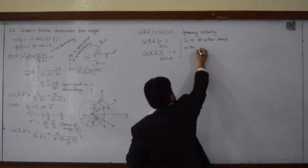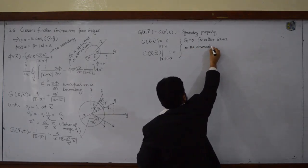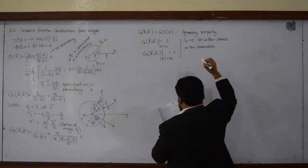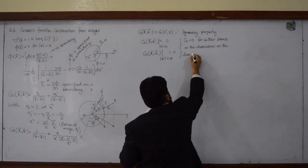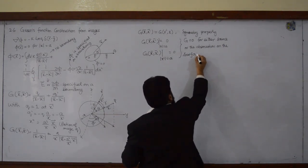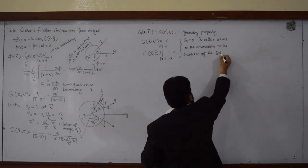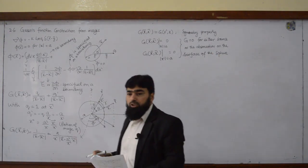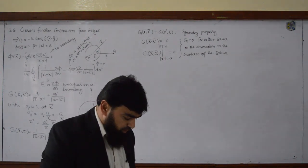The observation point is on the surface of the sphere. So g is equal to 0 on both of these.